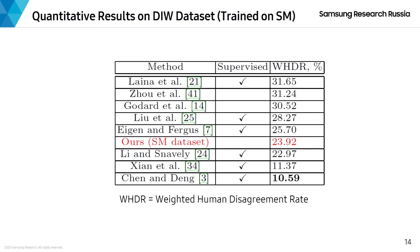As to the model trained on the SM dataset, we used the Depth-in-the-Wild dataset containing a very diverse set of sceneries annotated with relative depth labels, and weighted human disagreement rate as the depth estimation accuracy metric. Again, our method outperforms previous unsupervised methods and even some of the supervised methods.